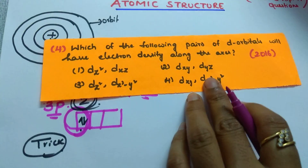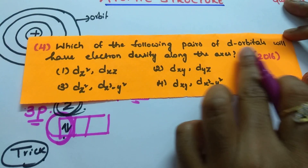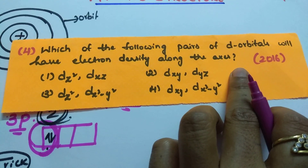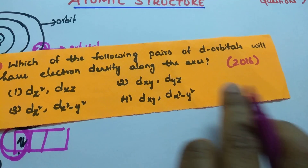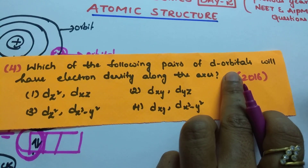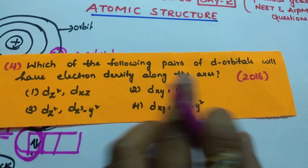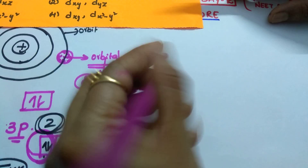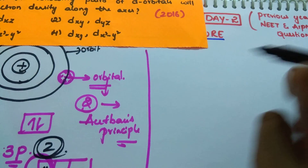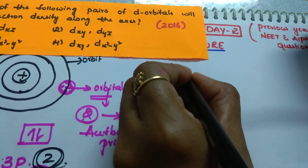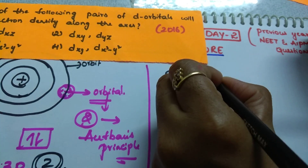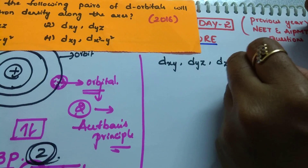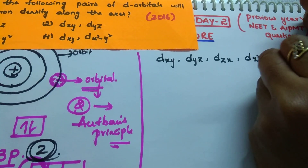2016 question: which of the following pairs of d orbitals will have the electron density along the axis? To answer this question, you should have an idea of d orbital shape. The shape of d orbitals is double dumbbell shape. How many d orbitals are there? 5. What are those? dxy, dyz, dzx, dx²-y², and dz².